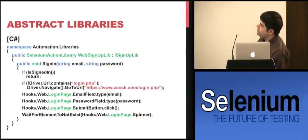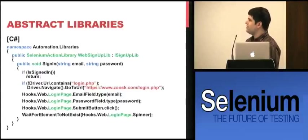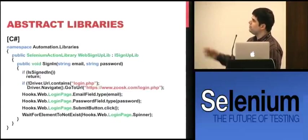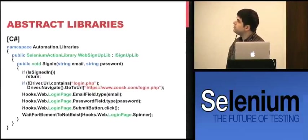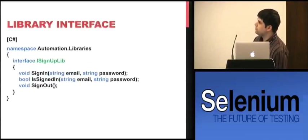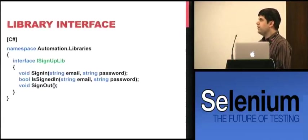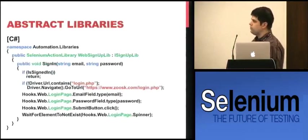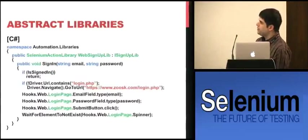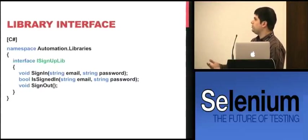Here's a web example of signing in. It calls isSignedIn — if already signed in it does nothing; if not, it goes to the login page, types email, password, submits, and waits for the spinner to go away. Abstracted one level up, we have a SignUpLib interface where you know you can call signIn, isSignedIn, signOut. That way when you code a test and want to see if someone's signed in, it doesn't matter what platform — it's in the interface. On iPhone it's implemented differently — tapping elements, using the on-screen keyboard — but it has the same interface and can be controlled from a layer up.